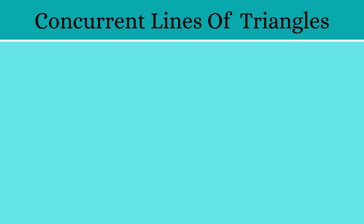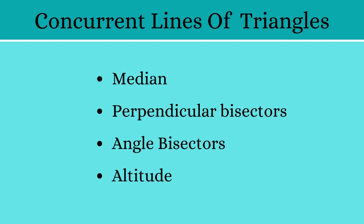Concurrent Lines of a Triangle. There are 4 different types of concurrent lines. Let's see each of them in detail.